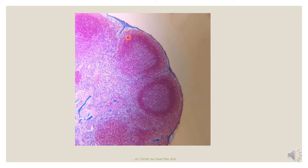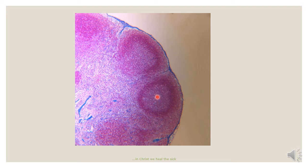The cortex is made up of numerous cell aggregates, and these cellular aggregates are called the follicles. These follicles have two forms: you have the primary follicle, and then the secondary follicle, the secondary follicle having a pale center, while the primary follicle has no pale center.